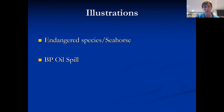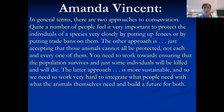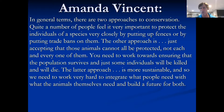At the end of The Kingdom of the Seahorse, Amanda Vincent explains the difference between the two approaches: 'There are two approaches to conservation. Quite a number of people feel it's important to protect individuals of a species closely by putting up fences or trade bans on them. The other approach is accepting that not each and every individual can be protected — you need to ensure the population survives and just some individuals will be killed. The latter approach is more sustainable. We need to integrate what people need with what the animals themselves need to build a future for both.' If you're concerned about endangered species, you have to make a comparative assessment: privatization through common law, or legislation that keeps the resource in commons and restricts access.